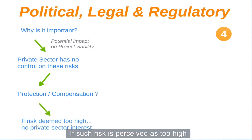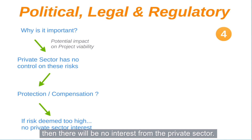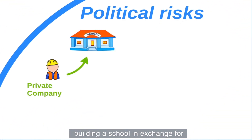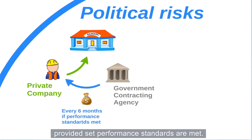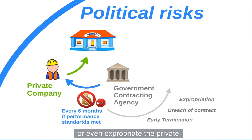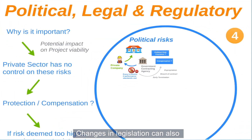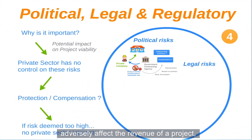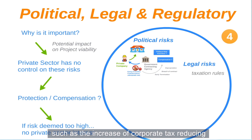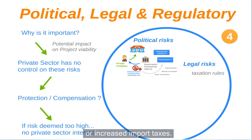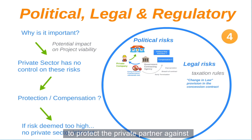For example, consider a private company building a school in exchange for regular payments from the government, provided performance standards are met. The political risk is that the government may decide to terminate the contract or even expropriate the private company without adequate compensation. Political risk insurance is available to offer a solution to this issue. Changes in legislation can also adversely affect the revenue of a project — such as an increase in corporate tax reducing net revenue of private sponsors, or increased import taxes. Often, a change-in-law provision can be included in the concession contract to protect the private partner against the impact of future changes to legislation.